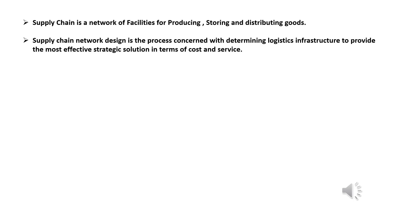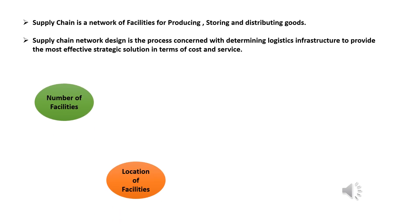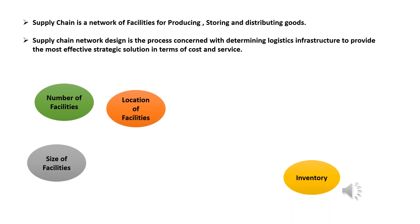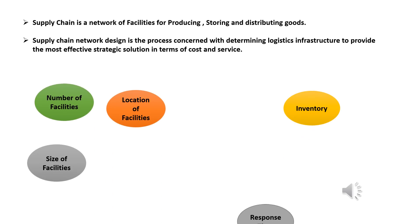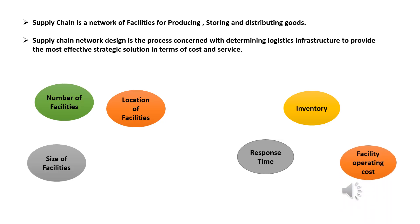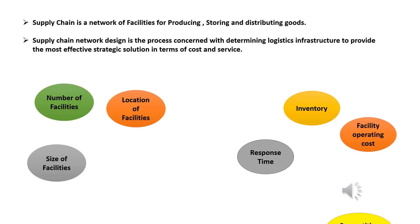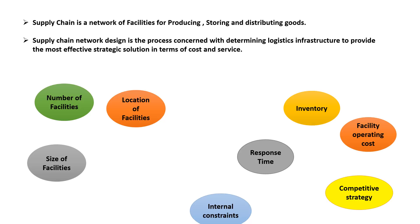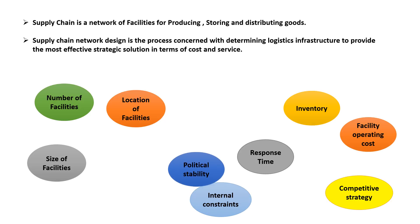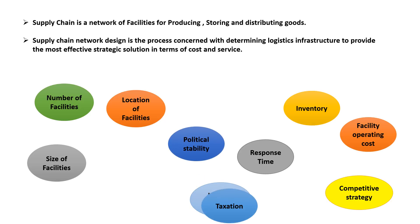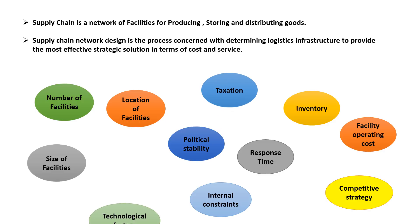While designing a supply chain network, numerous factors have to be considered, such as number of facilities, location of facilities, size of facilities, inventory levels, response time to fulfill customer orders, operating cost, competitive strategy, internal constraints, political stability, taxation, and technological factors.